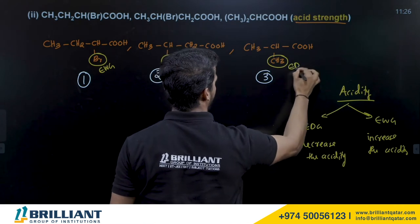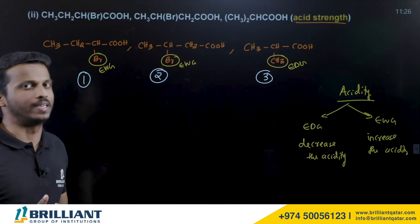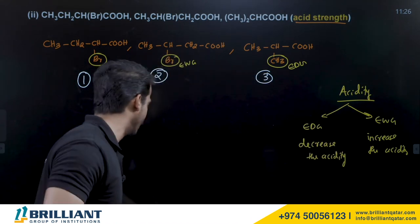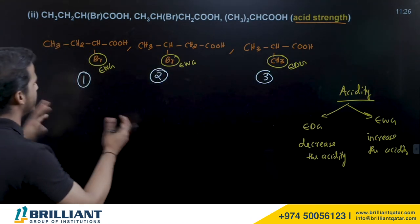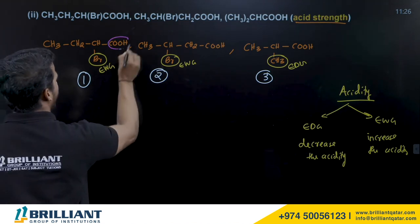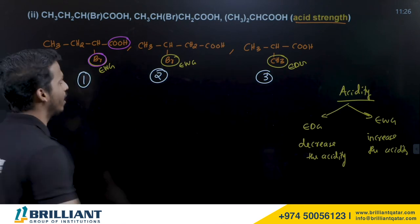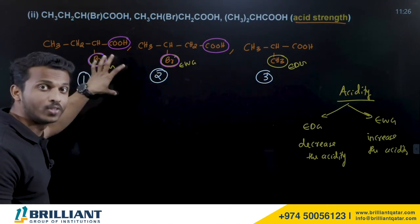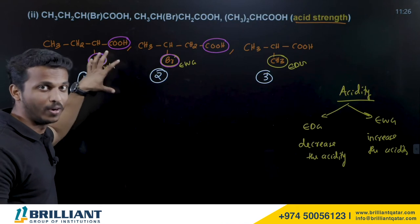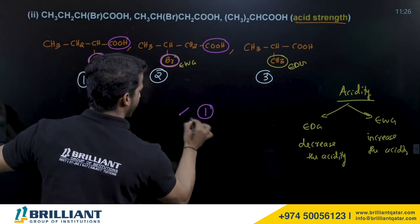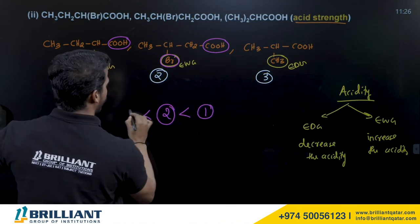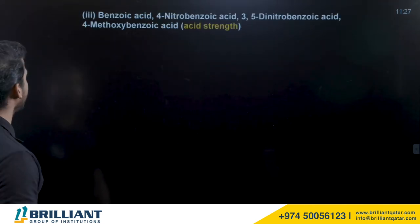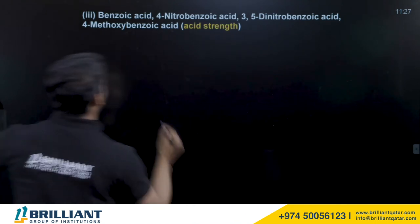Halogens are electron-withdrawing groups and increase acidity. Alkyl groups are electron-donating and decrease acidity. Compounds 1 and 2 both contain bromine (withdrawing), so they are more acidic than compound 3. Between 1 and 2: in compound 1 the bromine is closer to the acid group, so its withdrawing effect is stronger — compound 1 is more acidic than compound 2.